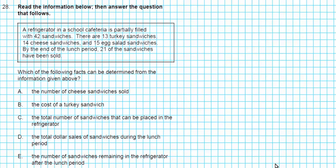Let's take a look at question 28. It says a refrigerator in a school cafeteria is partially filled with 42 sandwiches. There are 13 turkey sandwiches, 14 cheese sandwiches, and 15 egg salad sandwiches. By the end of the lunch period, 21 of the sandwiches have been sold. Question: Which of the following facts can be determined from the information given above? This one can be done by simply using the method of elimination. We're going to try and see if we can determine a statement. If we can't, we'll just eliminate that.